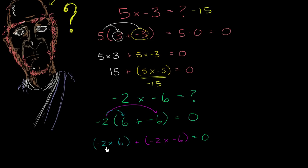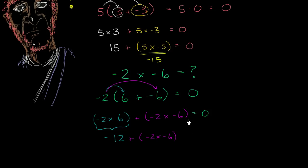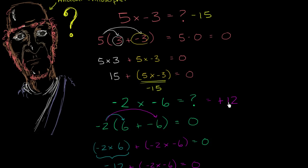Based on the thought experiment we just did, negative 2 times 6 needs to equal negative 12 — whether you think of it as going 6 steps twice in the left direction on the number line, or repeatedly adding negative 2 six times. We also saw that a positive times a negative gives a negative. So we have negative 12 plus whatever negative 2 times negative 6 is needs to equal 0. What plus negative 12 equals 0? Positive 12. So negative 2 times negative 6 needs to equal positive 12 to be consistent with all of the other mathematics we know.